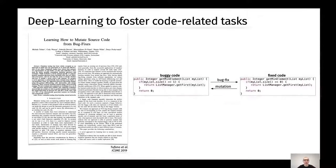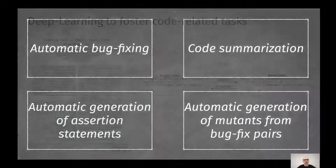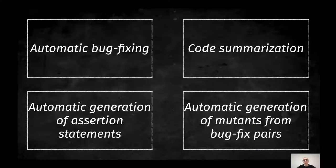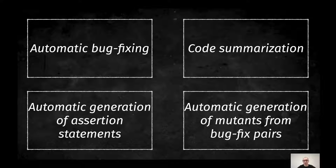And finally, in this fourth work, Tufano and colleagues presented a model for learning how to mutate source code from bug fixes. These four tasks that I've briefly described to you are four code-related tasks that have been addressed with four different models.